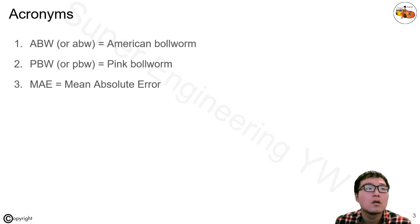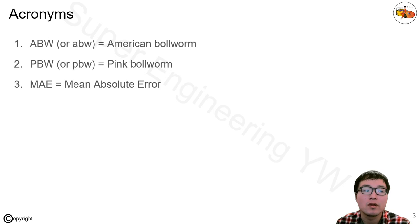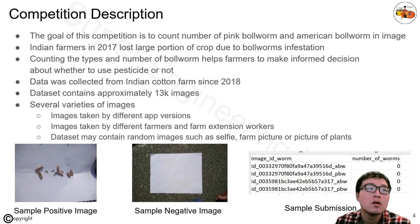There are several terms defined here. One is the American Bollworm, and the other is the Pink Bollworm — two types of pests that might have different impacts on the cotton farm. There is also the Mean Absolute Error, which is a metric that will be used to evaluate the performance of the model. The goal of this competition is to count the number of Pink Bollworm and American Bollworm in an image.